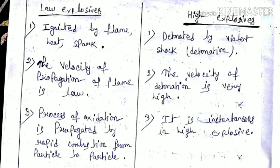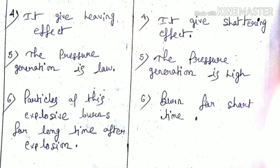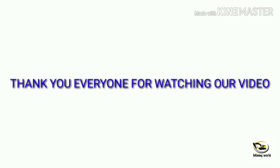Differences between low explosives and high explosives: Low explosives are ignited by flame, heat or spark, while high explosives are detonated by violent shock, known as detonation. The velocity of propagation of flame is low in case of low explosives and very high in case of high explosives. The propagation of the oxidation process in low explosives is from particle to particle, but in high explosives it is instantaneous. Low explosives give good heaving effect and high explosives give good shattering effect. The pressure generation is low for low explosives and high for high explosives. Particles of low explosives burn for a long time after explosion, but in case of high explosives, particles burn for a short time.